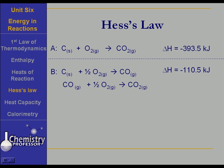But we can then take that carbon monoxide, allow it to react with more oxygen, and produce carbon dioxide. And when we do, the delta H is minus 283.0 kilojoules.